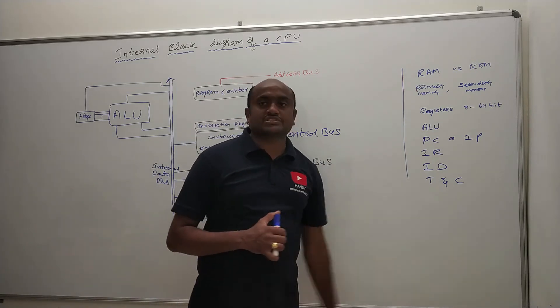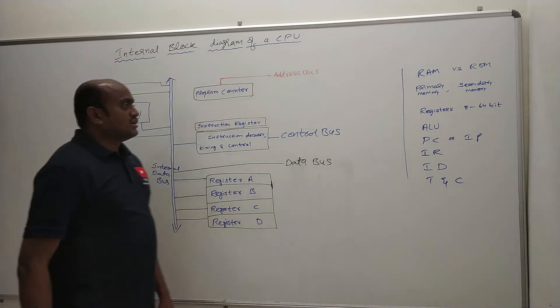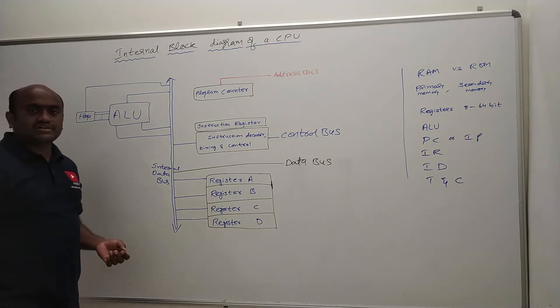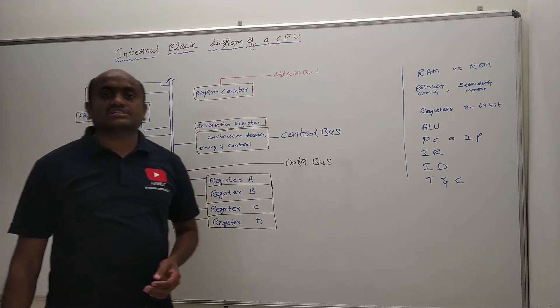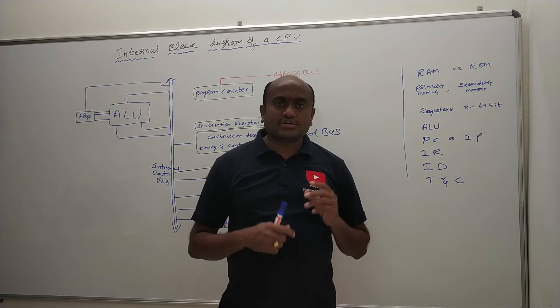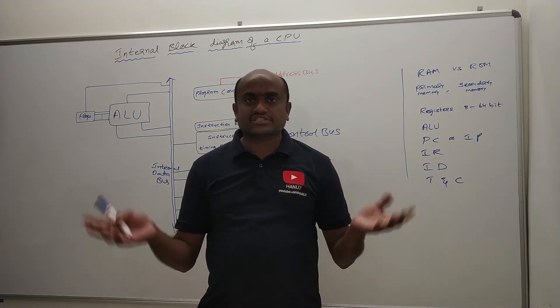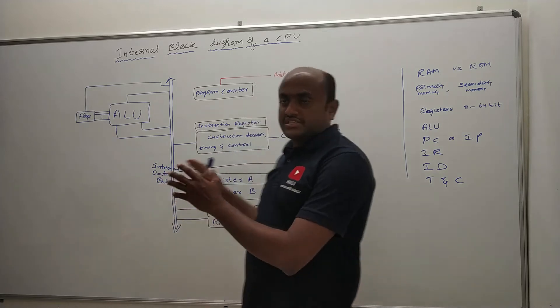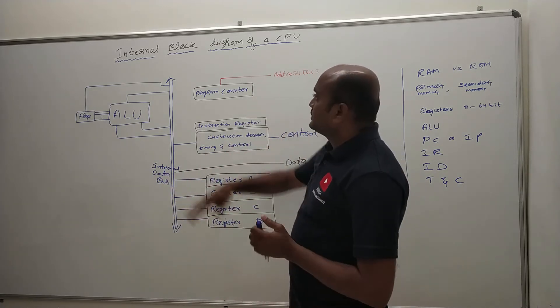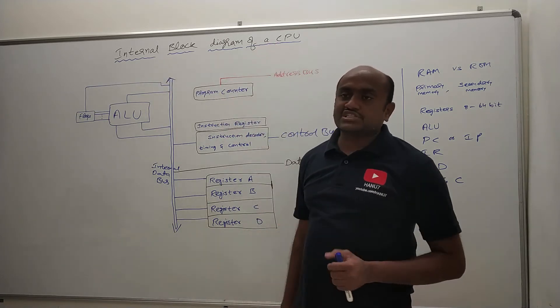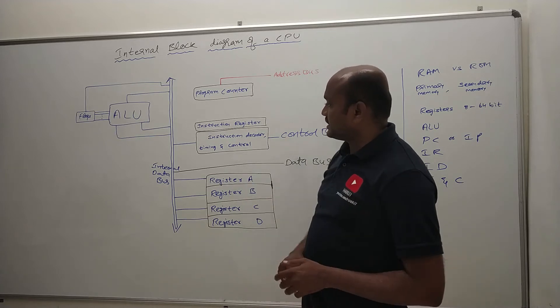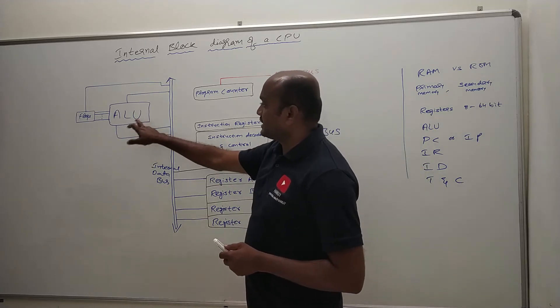So that is about the first two points RAM versus ROM. Now coming to the internal program of any CPU, whether it is 8051 or whether it is 8086 or any latest microprocessor in the market. So out of all the CPUs which are available, I am summarizing a generalized CPU. What does the internal block diagram of a particular CPU consist of? So it is having one main part called ALU.